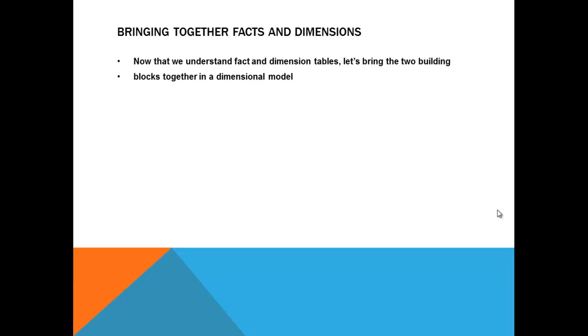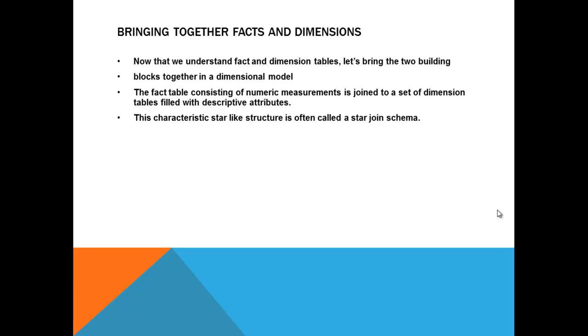The fact table consisting of numeric measurement is joined to a set of dimension tables filled with the descriptive attributes. So fact table is having numerical measurements and actual description is in the dimension table, that's all it is. This character star like structure is often called as a star join schema. Let us see the schema. So what you call, why you call the star schema is the fact table surrounded by the dimension tables.